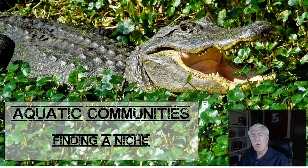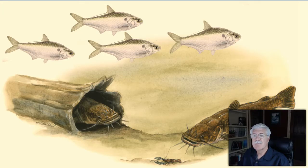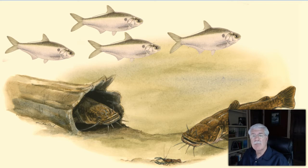Texas's diverse aquatic environments provide many different niches. Flathead catfish, for example, can live in the same reservoir with gizzard shad because they don't compete for the same niche.